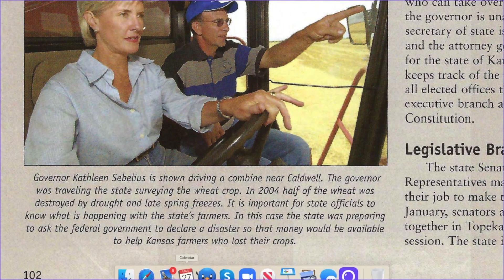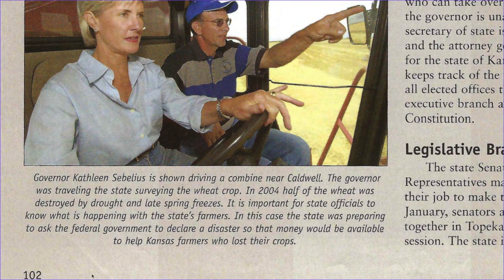Governor Kathleen Sebelius is shown driving a combine near Caldwell. The governor was traveling the state surveying the wheat crop. In 2004, half of the wheat was destroyed by drought and late spring freezes. It is important for state officials to know what is happening with the state's farmers. In this case, the state was preparing to ask the federal government to declare a disaster so that money would be available to help Kansas farmers who lost their crops.